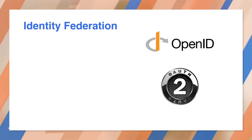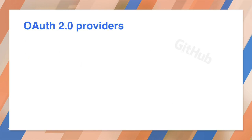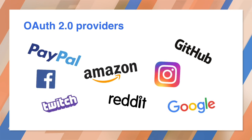Web developers can choose between multiple standards, including OpenID Connect and OAuth. Both of these have the exact same benefits. Users won't need a new password, and the Identity Provider handles any security challenges. When you use one of those services, you can also receive profile information from the provider. There are at least 40 Identity Providers worldwide.